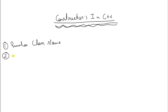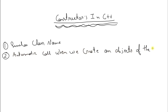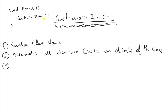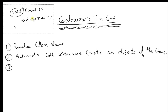They get called automatically when we create an object of the class. The third point is that a constructor doesn't have any return type. Generally if you write a function you type a return type like void or int, but this constructor, which is a function, does not have any return type.